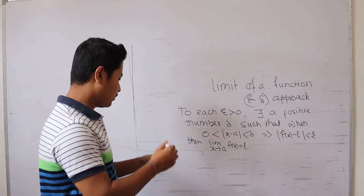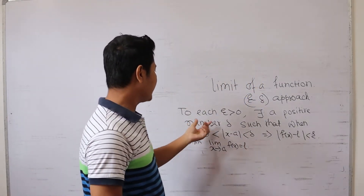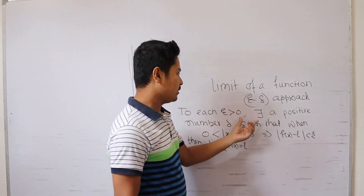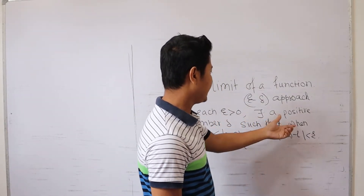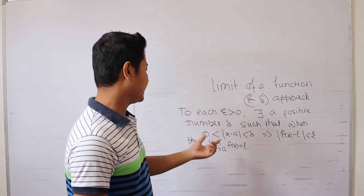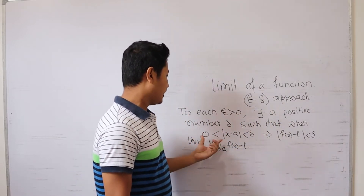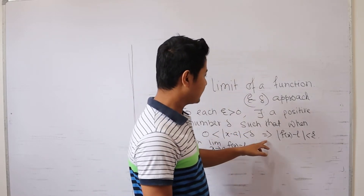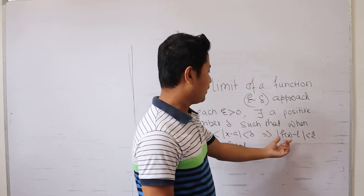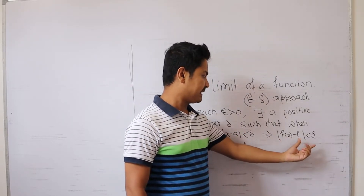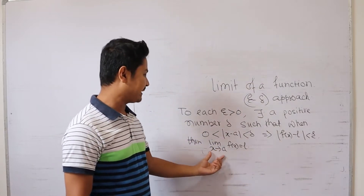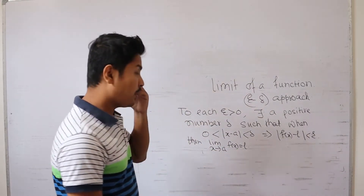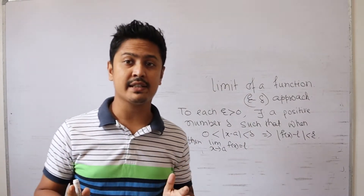So the definition of limit is: to each epsilon greater than 0, there exists a positive number delta such that when the inequality 0 less than mod of x minus a less than delta holds, it implies mod of f of x minus l is less than epsilon. Then we can say limit x approaches to a of f of x equals l.